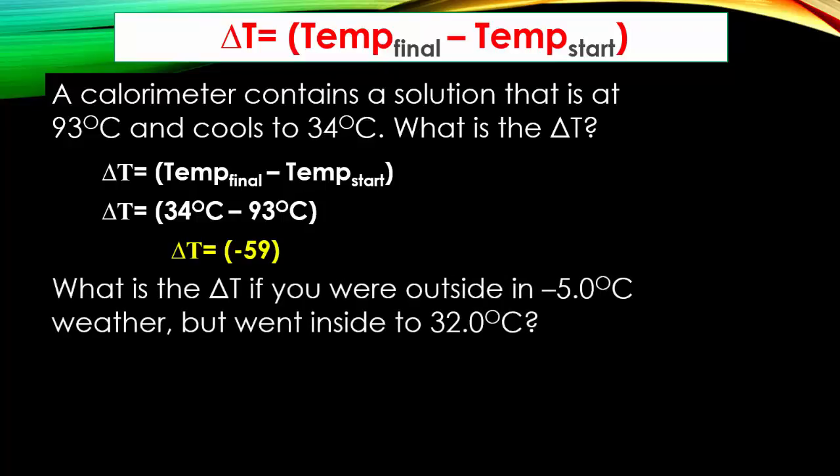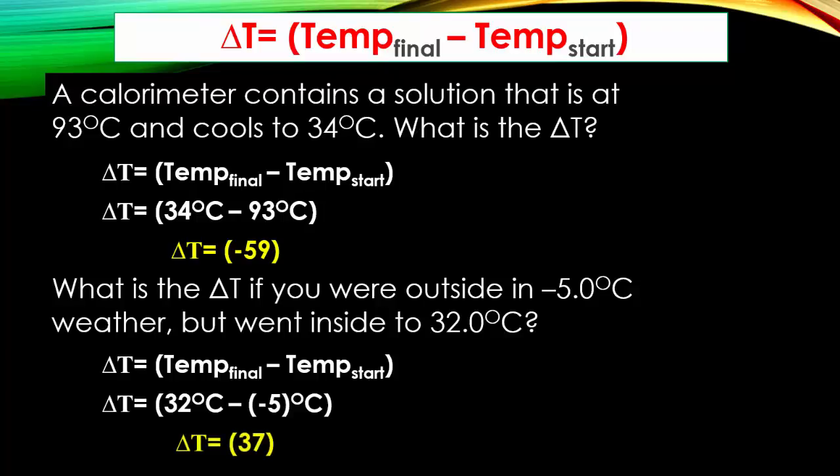Here's another question. What is the change in temperature if you were outside in negative 5 degrees weather, but went inside to 32 degree weather? You take your final temperature, which is 32 degrees Celsius, and you subtract it from negative 5 degrees Celsius. You take your final temperature of 32 degrees Celsius and you subtract it from your negative 5 degree final temperature, and you will determine that you have increased by 37 degrees Celsius. A gaining of heat means you have an endothermic reaction.